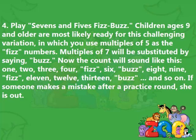4. Play 7's and 5's Fizz Buzz. Children ages 9 and older are most likely ready for this challenging variation, in which you use multiples of 5 as the Fizz numbers. Multiples of 7 will be substituted by saying buzz. Now the count will sound like this: